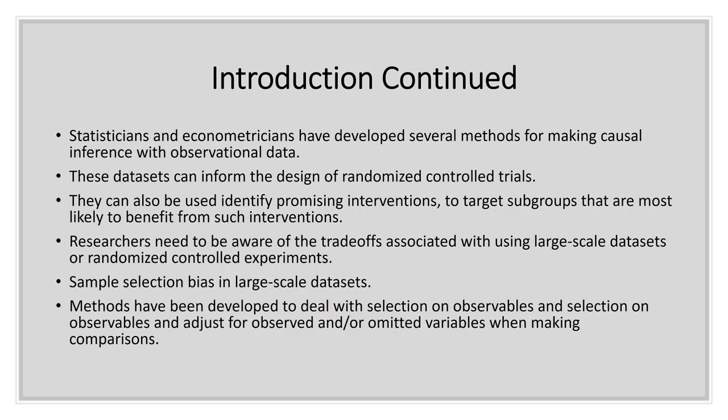One of the big issues with large-scale data sets is sample selection bias — the idea that the sample is not representative of the overall population. The good thing is that these data sets are designed and collected using probability sampling techniques. They've often been re-weighted afterwards to ensure the sample is representative of the overall population. Knowing and understanding how to use those weights and statistical techniques allows us to get away from the sample bias that exists in the data.